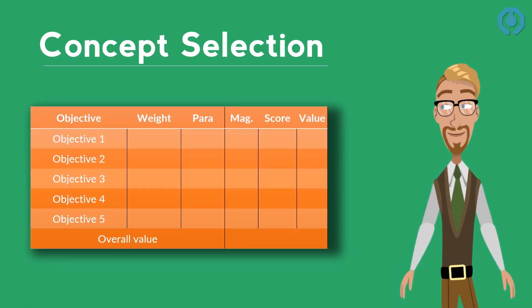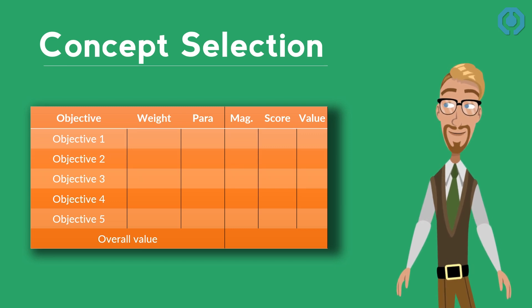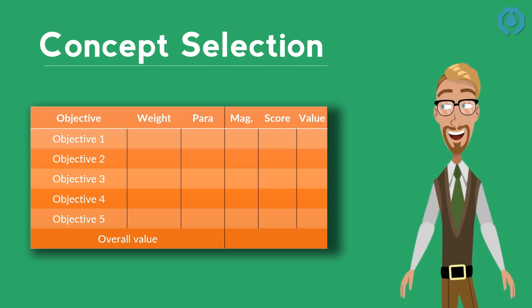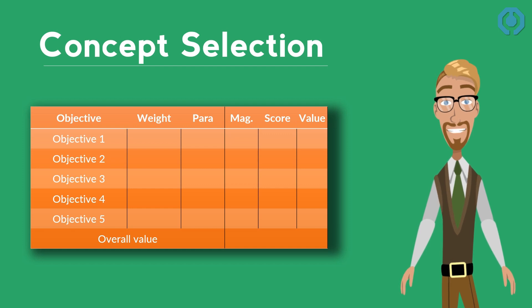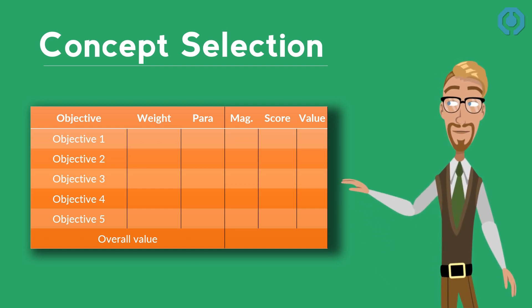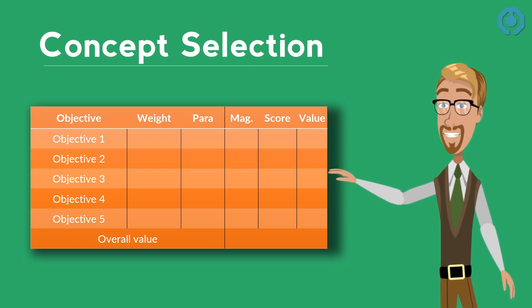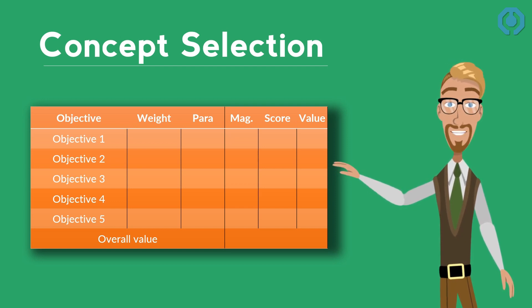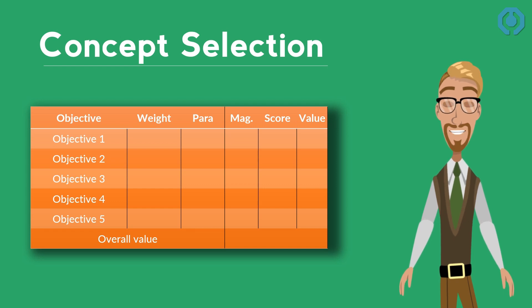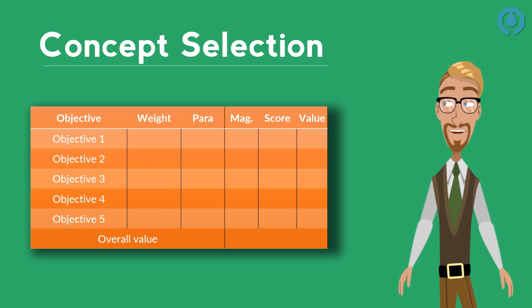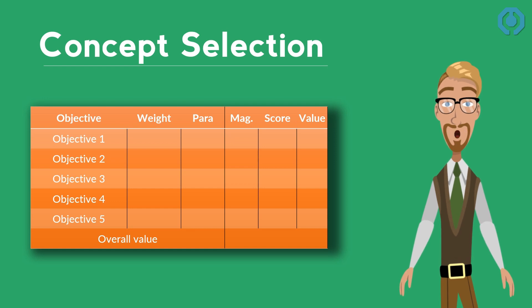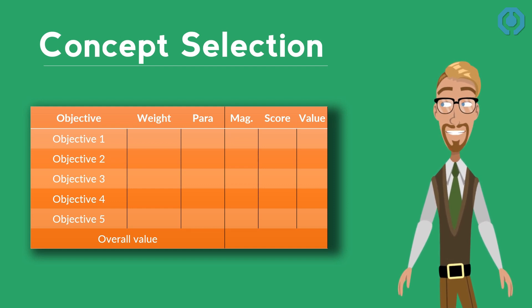The next important step to design a product is concept selection. For this purpose, we usually form a decision matrix to evaluate different ideas based on objectives. The decision matrix contains one column for each design concept. To form a decision matrix, one can begin by selecting the objectives of design, then assign weighting factors based on how important each objective is to the overall success. The parameter column lists the units for each objective, and magnitude is the assigned value of each objective. Each concept receives a score, which is the relative comparison of the different magnitudes. The best magnitude always receives the highest score. Value is simply the weighting factor times the score for a particular conceptual design. At the end, the overall value determines which concept is the best and should be selected.